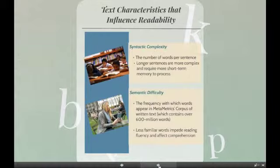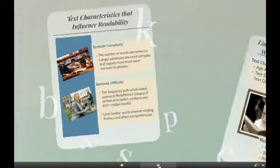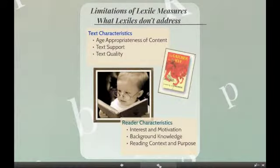So how is the Lexile Measure on a text obtained? Our metric takes into account two characteristics: sentence length and vocabulary — more specifically, the complexity of the sentences and the words within them. While there are other factors that influence readability, these are the factors that allow us to gauge the complexity of a prose text and to predict the likely comprehension rate for a reader. It's important to note that the Lexile Measure of a text does not indicate age-appropriateness, the level of text support provided, or text quality.